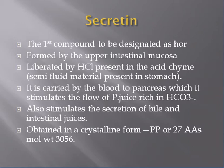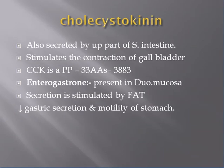Secretin also stimulates the secretion of bile and intestinal juice. It is obtained in crystalline form, is protein-like, consists of 27 amino acids, and has a molecular weight of 3056.